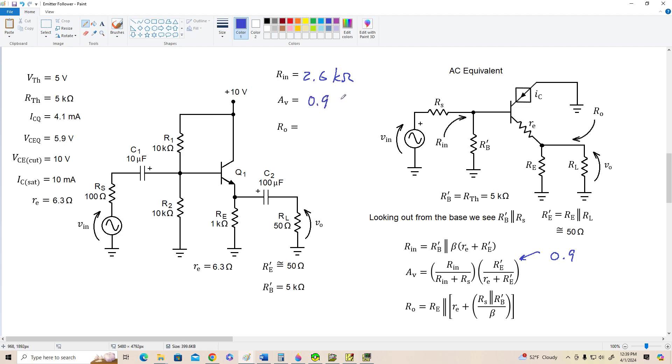And let's say our voltage gain is approximately 0.9. Not too bad, considering the highest it could possibly be is 1.